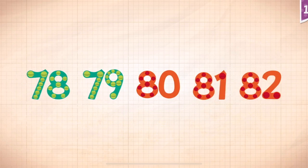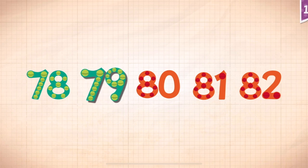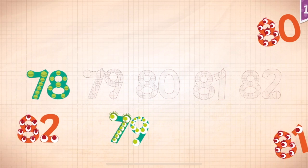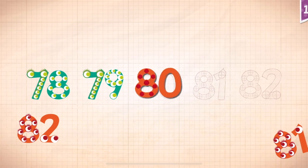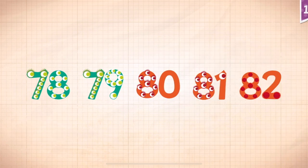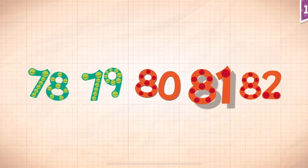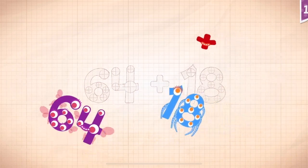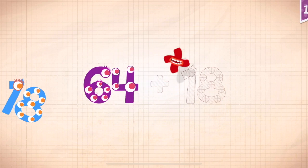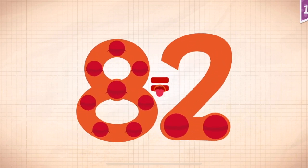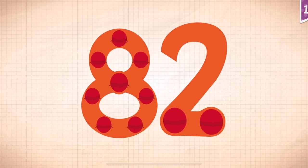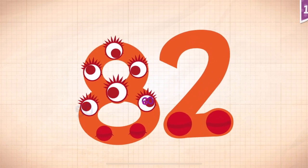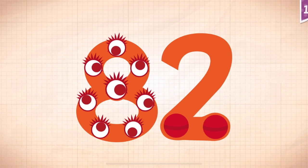Count by ones starting at seventy-eight. 78, 79, 80, 81, 82. 78, 78, 79, 80, 81, 82. 78, 79, 80, 81, 82. 64 plus 18, 64 plus 18 equals 82. Touch the monster's eyes to wake it up. 10, 20, 30, 40, 50, 60, 70, 80, 82.